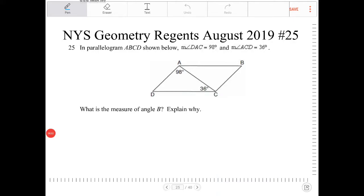In parallelogram ABCD shown below, angle DAC is 98 degrees and angle ACD is 36 degrees, which is already drawn in the diagram. What is the measure of angle B? Explain why.